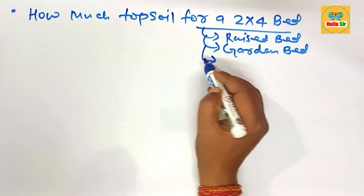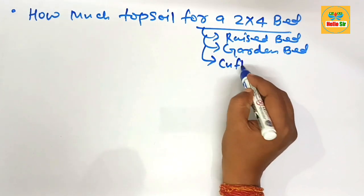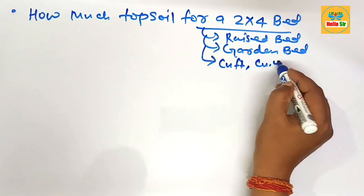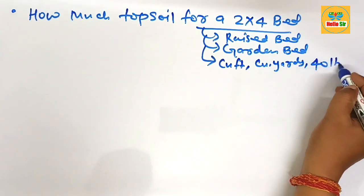The quantity of topsoil needed is calculated in various units like cubic feet, cubic yards, and the number of 40 pound bags.